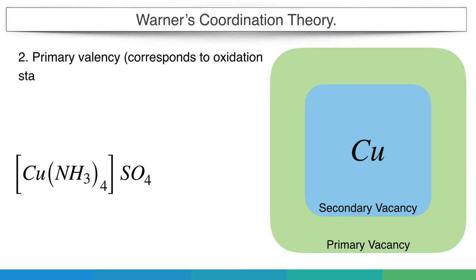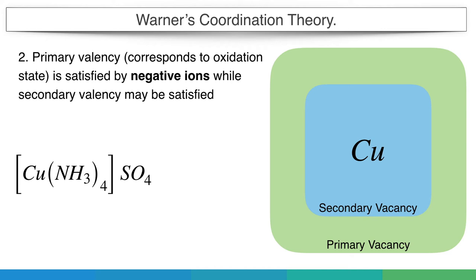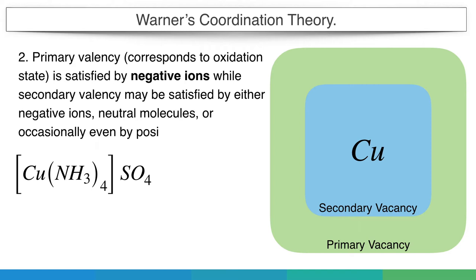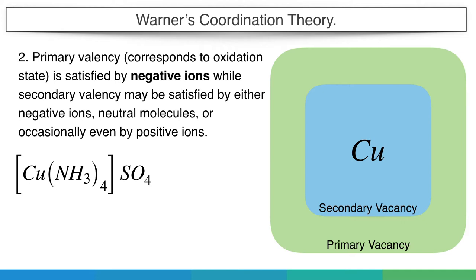Second, the primary valency corresponds to oxidation state and is satisfied by negative ions, while the secondary valency may be satisfied by either negative ions, neutral molecules, or occasionally even by positive ions. That means the primary valency is equal to the oxidation state of the metal, as the same number of bonds it will make with negative ions. Like here, plus 2 valency of copper is neutralized by minus 2 valency of sulfate ions.